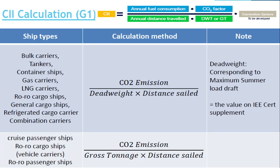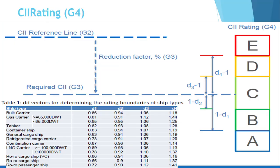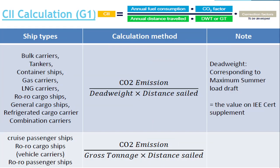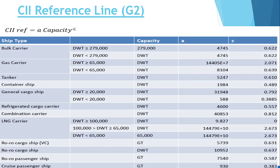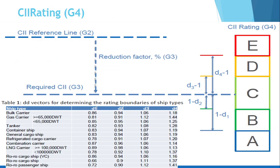Before knowing about the CII calculation, you should know there are 4 guidelines: G1, G2, G3, and G4. G1 talks about the calculation method. G2 talks about the reference line. G3 talks about the required CII. And G4 talks about the rating.